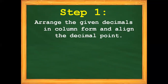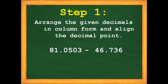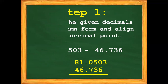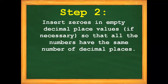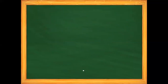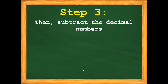Step number 1: arrange the given decimals in column form and align the decimal point. Let's change this into a column form. There you have it — we change this into a column form and align the decimal point. Step number 2: insert zeros in empty decimal place values if necessary so that all the numbers have the same number of decimal places. In this case, we need to add 0 in our subtrahend. Now, let's proceed to step number 3: subtract the decimal numbers.